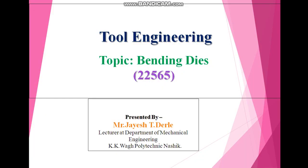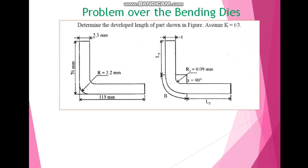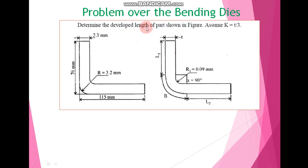In this video we are going to see the problem of bending dice. We have to determine the developed length of the part shown in the figure. We assume the value of k is equal to t divided by 3, where t represents the thickness of this part. In bending, there is a conversion of a straight part into a curved part, and after bending we have to calculate the developed length.